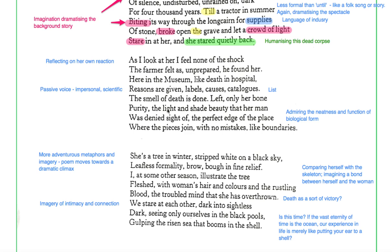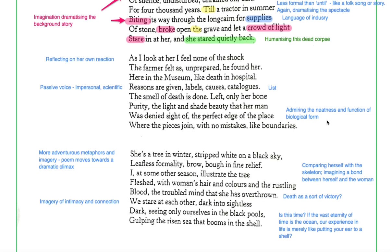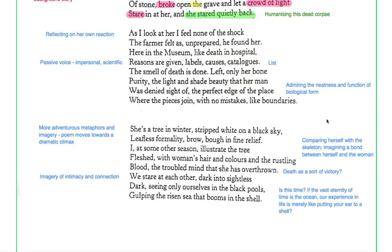Left only her bone purity, the light and shade beauty that her man was denied sight of, describing the skeleton here, the perfect edge of the place where the pieces join with no mistakes like boundaries. There's a sort of admiring quality to this detail that she builds up here, admiring the neatness and the function of the biological form. Slightly disconcerting in a way. Not everybody would necessarily pore over the remains of a corpse in this way. But so there's a strange mixture of her interest in the woman and the body and what's left of it.